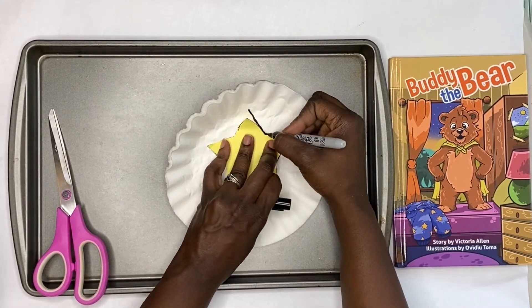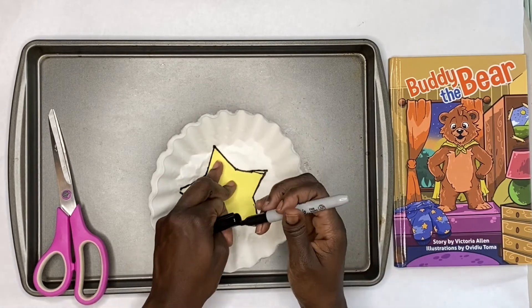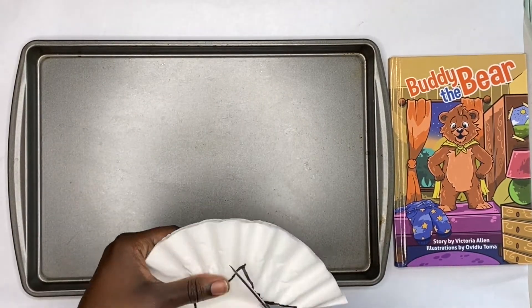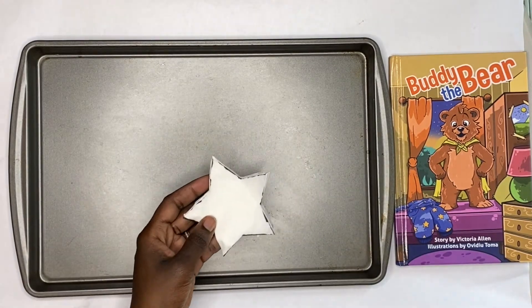Alright, so I had a die cut that was already lying around so I went ahead and traced that to make the perfect star. You can always print one online and have that as a tracer.